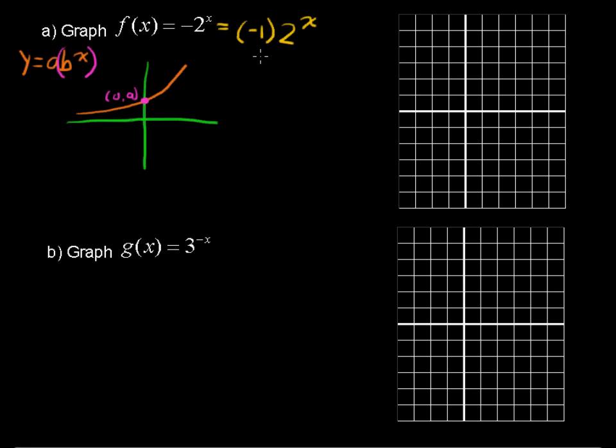And if a is negative, we said that when x is 0, the graph is going to cross the y-axis at a. So I'm going to write right here. This is our a right there. So it's going to come down like this. It's still crossing at y equals a. But in this case, a is negative 1.